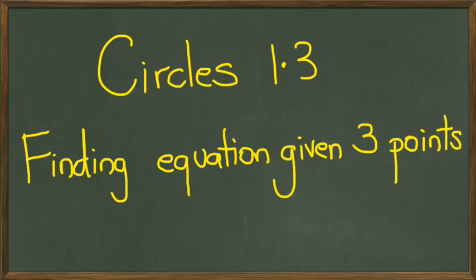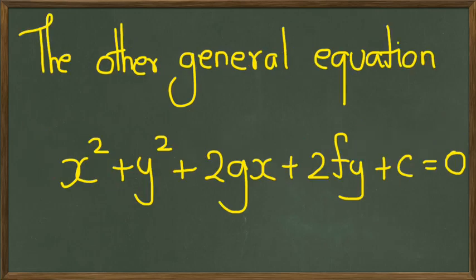Now to do this we need to know the other format of the general equation of a circle. And the other general equation is this right here, x squared plus y squared plus 2gx plus 2fy plus c equals 0.